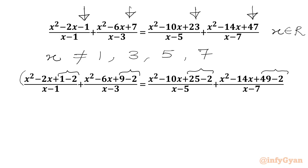If we put the first three terms of the numerators in one bracket, then x squared minus 2x plus 1 is the perfect square of x minus 1. Similarly, x squared minus 6x plus 9 is the perfect square of x minus 3, x squared minus 10x plus 25 is the perfect square of x minus 5, and x squared minus 14x plus 49 is the whole square of x minus 7.